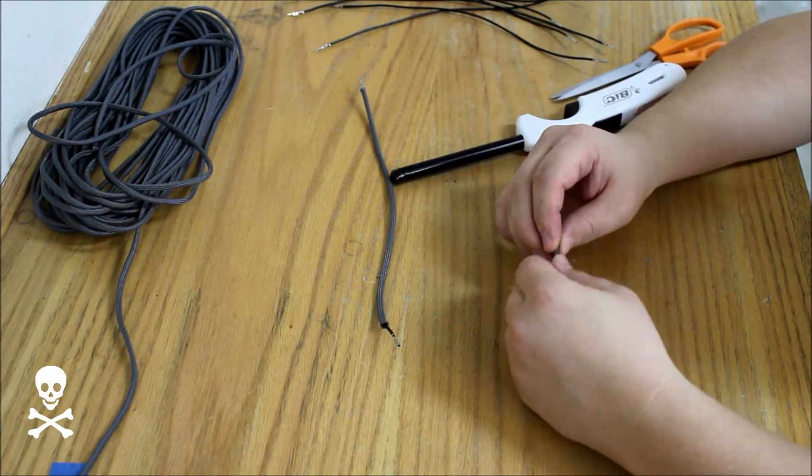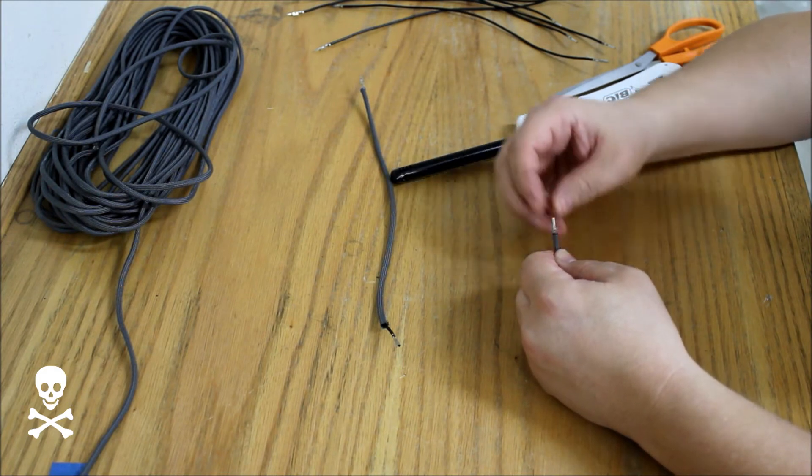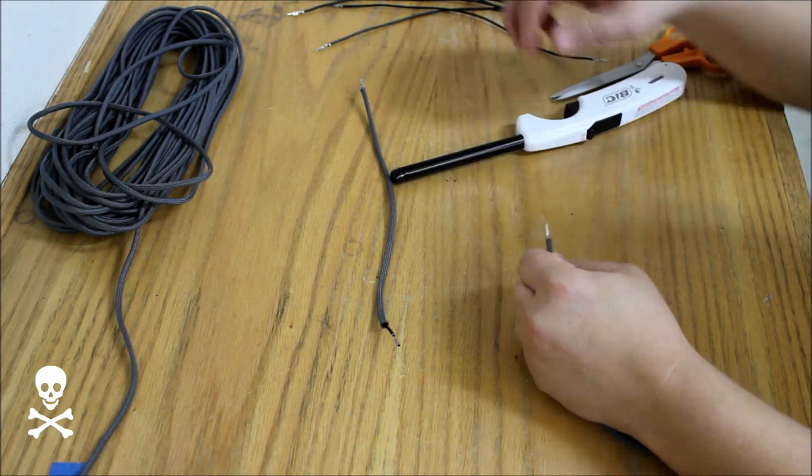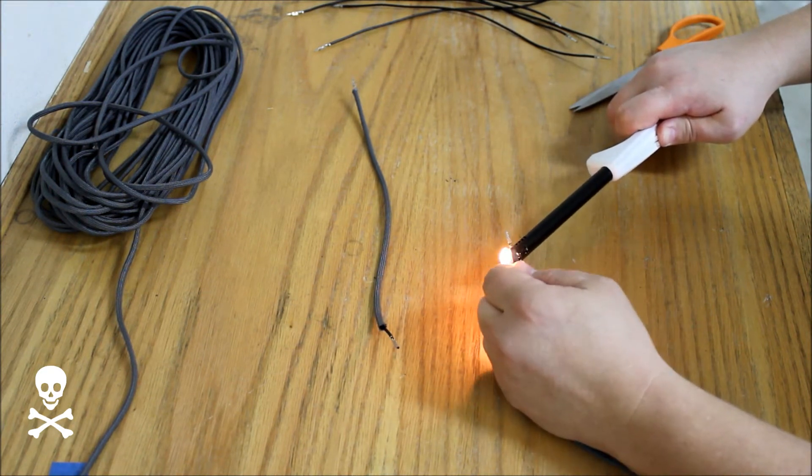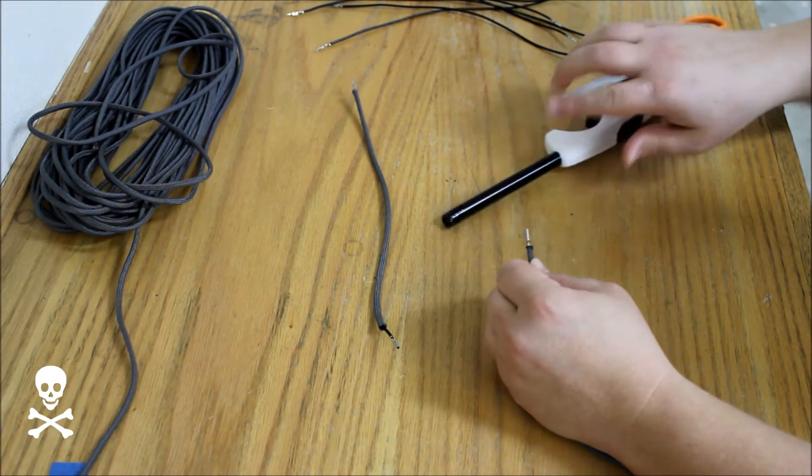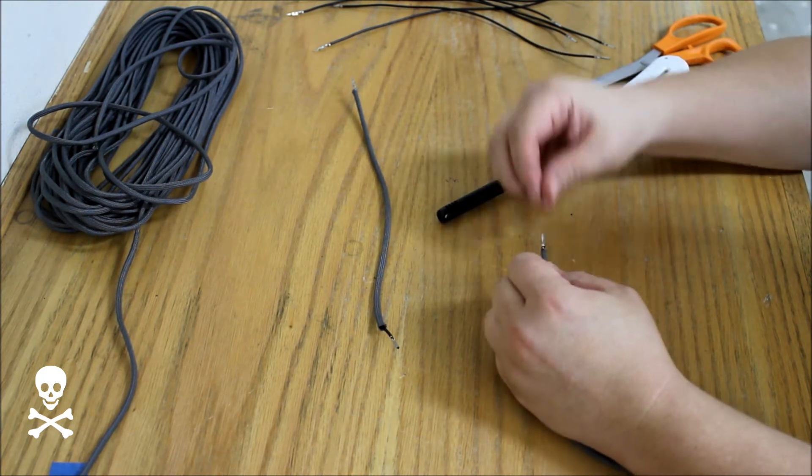So as you melt the paracord, you want to just pull it out like so and that'll give you a nice tapered effect around the end and it'll hold the paracord nice and tight.